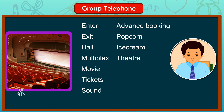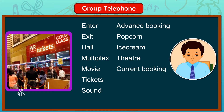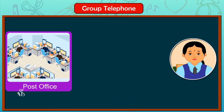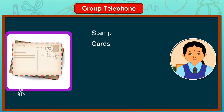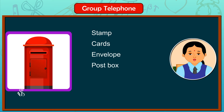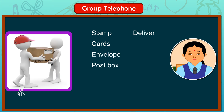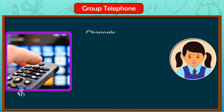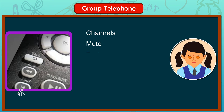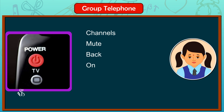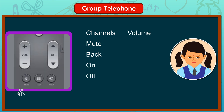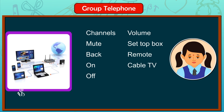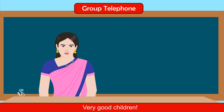Theater: current booking, house full, seat, row. The post office: stamp, cards, envelope, post box, deliver, parcel, letter. TV channels: mute, back, on, off, volume, set top box, remote, cable TV, network. Very good, children.